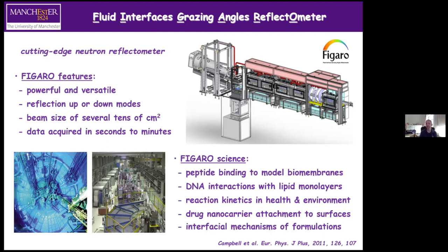Once a pulse is made, it travels down the instrument. Because neutrons take different times, the high-energy neutrons arrive first and low-energy neutrons arrive last. The detector just needs to record in time, and then you can plot wavelength instead of time. That's the principle of the time-of-flight technique. The instrument is powerful and versatile — you have this choice of chopper pairs to balance between high resolution or high flux.